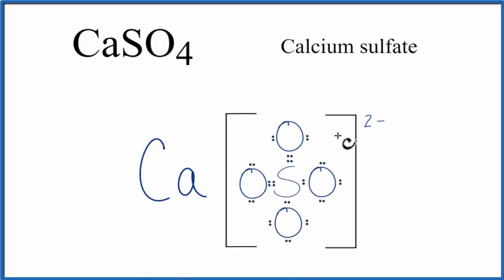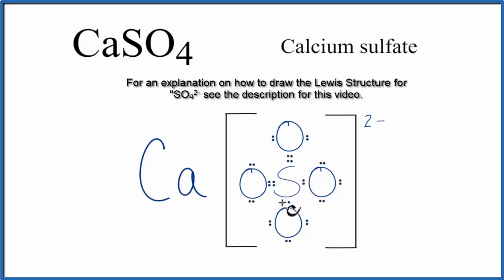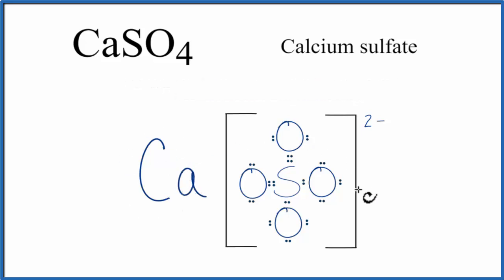We said calcium's a metal, and then we had a group of non-metals here with the sulfate ion. That means it's an ionic compound, and the electrons, the valence electrons, are going to be transferred from the metal to the non-metals.